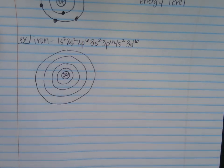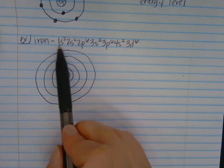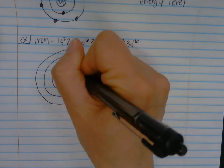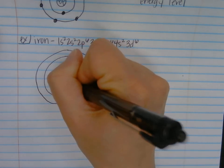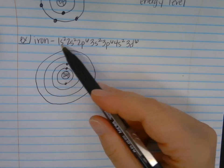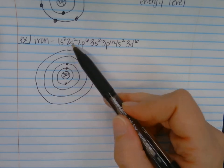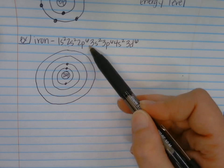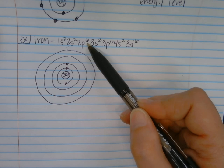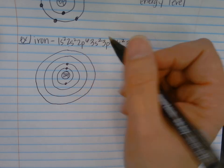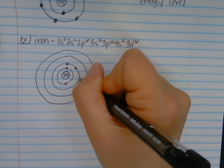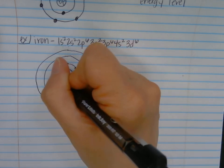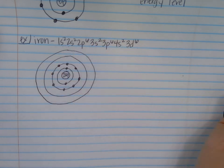Now just start placing your electrons on those rings. 1s2 means 2 on the innermost ring — so 1, 2. Then 2s2 and 2p6 — that's a total of 8 electrons on the second energy level: 2 from the s orbital and 6 from the p orbital. So I'm going to draw 8 on the second ring.